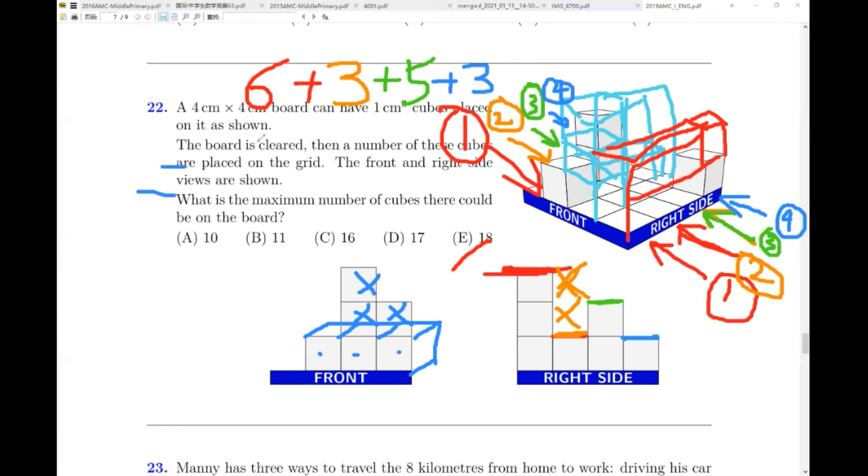So add them together. Nine, eight, seventeen. So D is only twice. The answer. D is the answer.